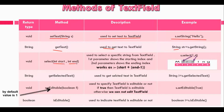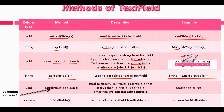The next method is select() with two integer parameters, used to select a specific string from the TextField. The first parameter is the starting index and the second parameter specifies the ending index. Note that it works as: starting index to ending index minus one. For example, using select() from starting index 1 and ending index 4 on the string 'morning', 'o', 'r', and 'n' will be selected. The next method is getSelectedText() with String return type, used to get the selected text in the TextField.